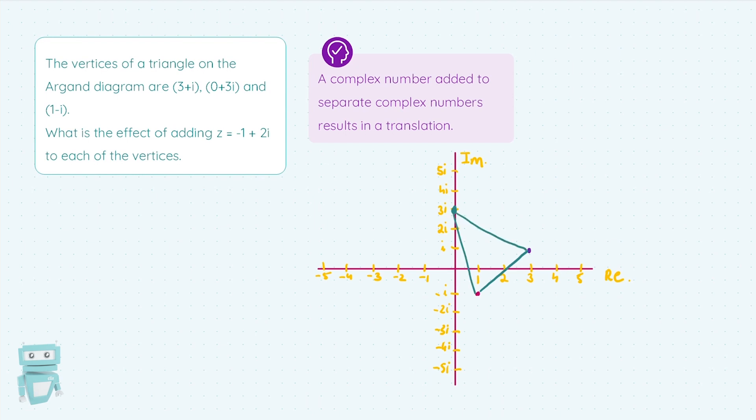Now what we're going to do is add a complex number to each of those corners. So to our corner 3+i, we're going to add on -1+2i. When we're adding complex numbers, add together the real parts. So 3-1 gives me 2, plus i plus 2i gives me +3i.